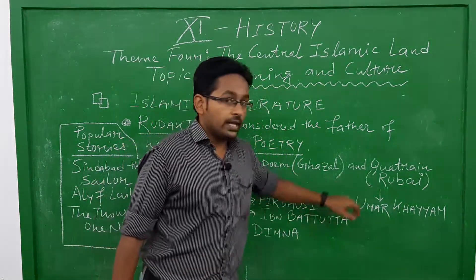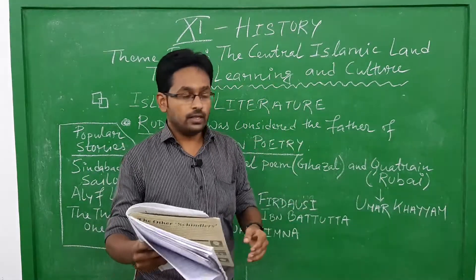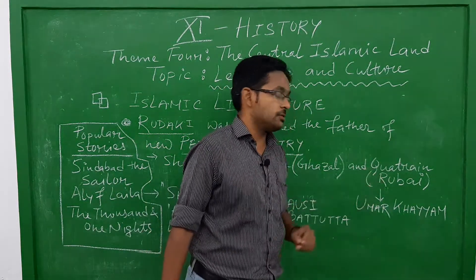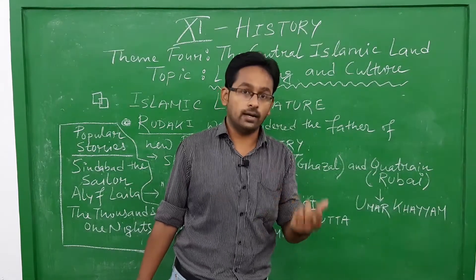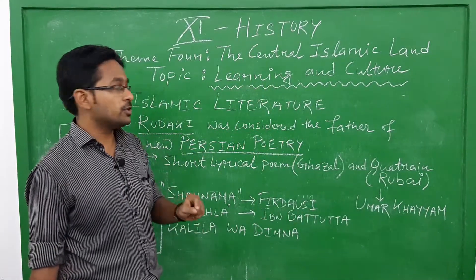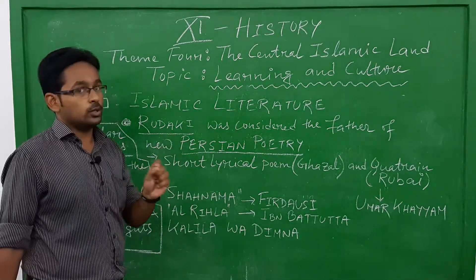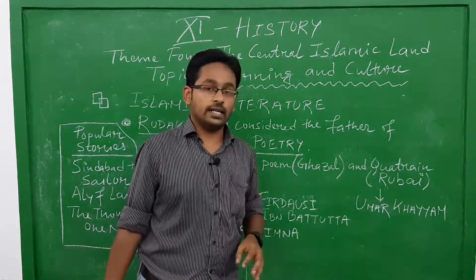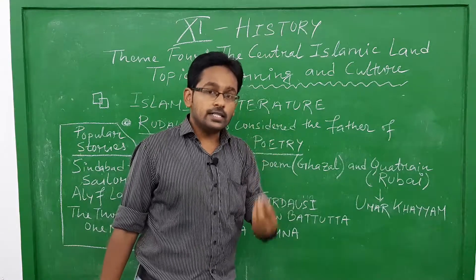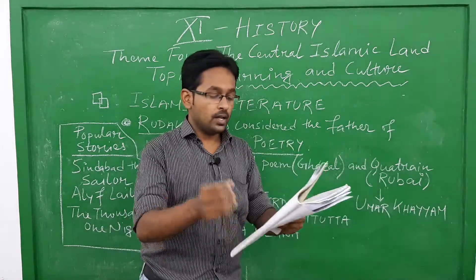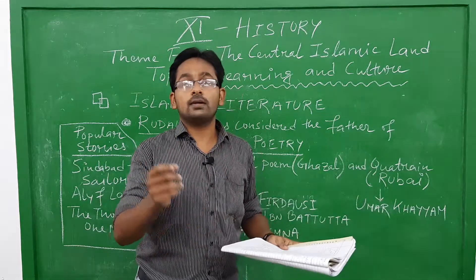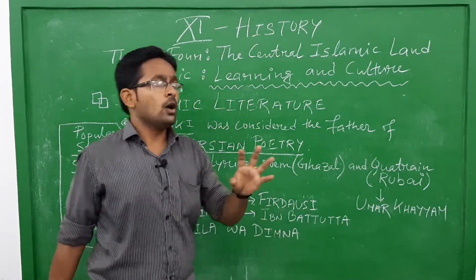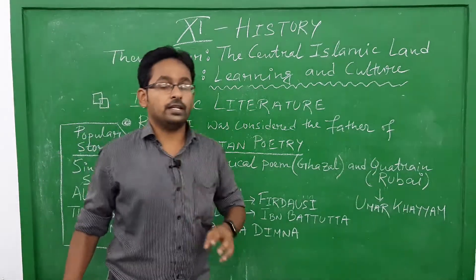Rubai reached its peak in the hands of Umar Khayyam. So the father of new Persian poetry was Rudaki, who introduced the Ghazal and the Rubai. Rubai reached its peak in the hands of Umar Khayyam, who was a famous astronomer and mathematician of the Islamic world. These points are all important for objective type questions.